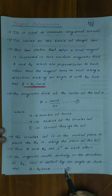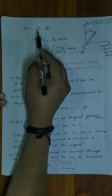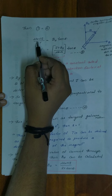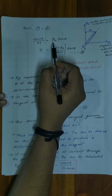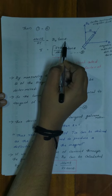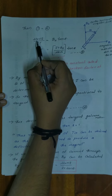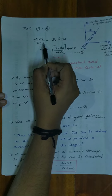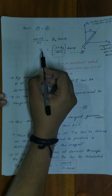Equation 2 is B is equal to BH tan theta. We can equate equation 1 and equation 2, then we get mu₀NI by 2R is equal to BH tan theta.